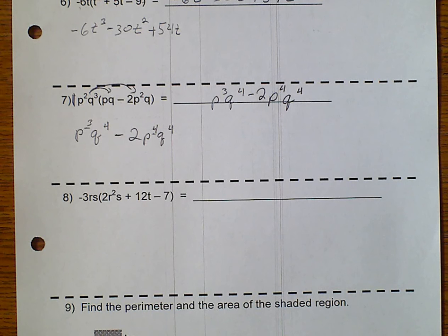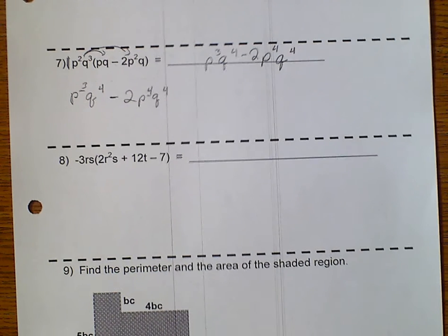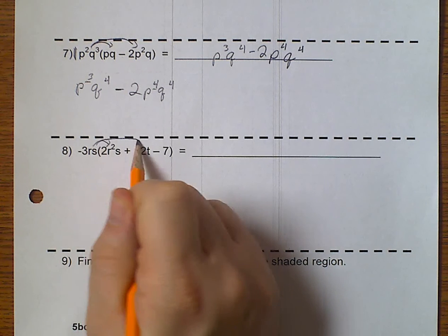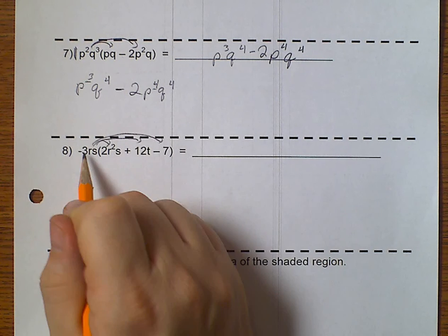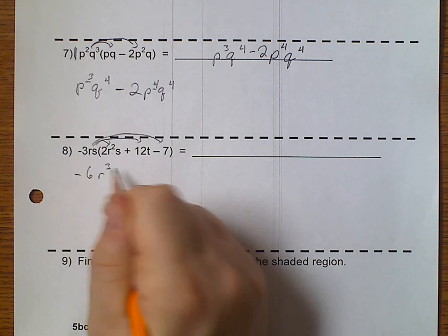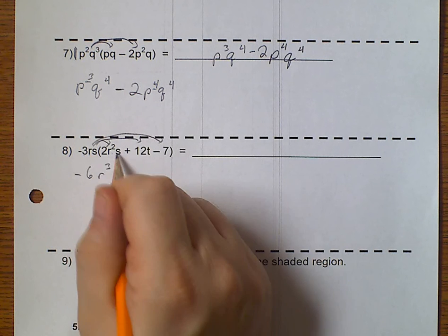Well, we've got another distributing problem. So, I distribute. Negative 3 times 2 is a negative 6. r and r squared make r to the 3rd. s and s make s squared.